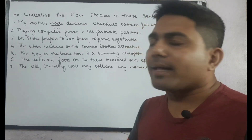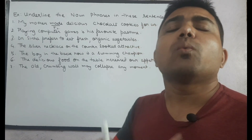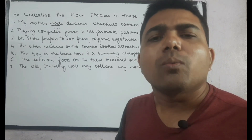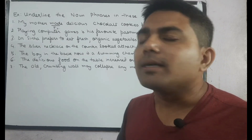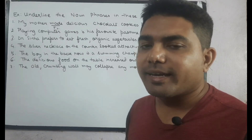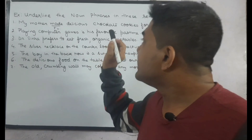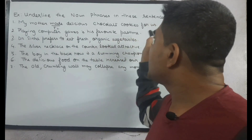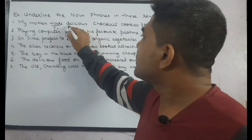Now let's question the verb with 'what': My mother made what? The answer we are getting is 'delicious chocolate cookies for us.'